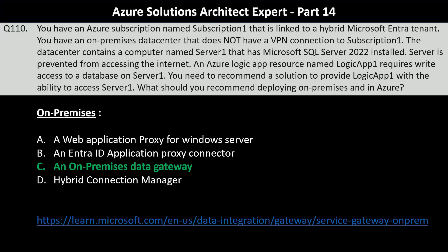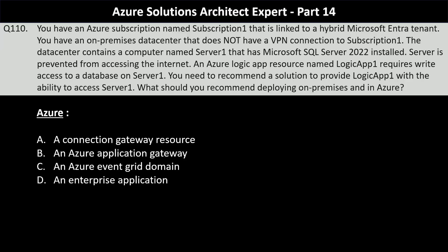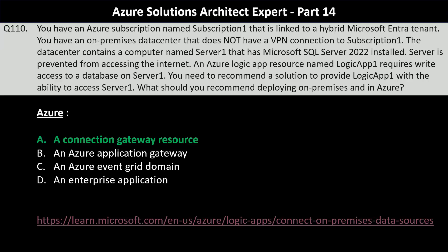Instead, the gateway communicates with Azure over HTTPS outbound traffic. For the Azure deployment, you should deploy a connection gateway resource, which is associated with the on-premise data gateway. The connection gateway in Azure is configured alongside the on-premise data gateway installed in the on-premise environment, enabling Azure Logic Apps to securely communicate with on-premise resources like SQL Server databases. There is a link on screen to understand this concept in more detail.